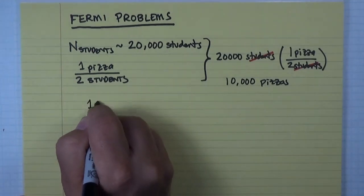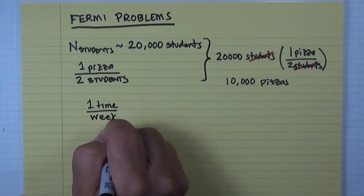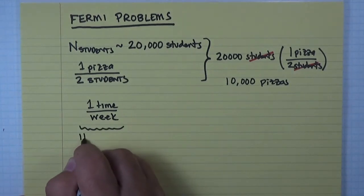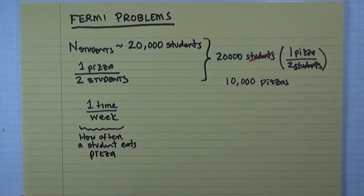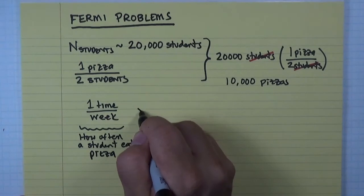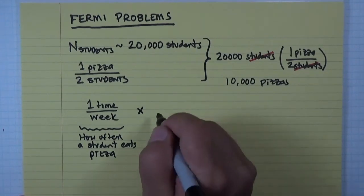So one time per week, right, this number is how often a student eats pizza. And so what I want to do is I want to multiply that by the number of weeks in the semester, the total time that I'm interested in considering how much pizza is eaten. And so a semester has approximately ten weeks.